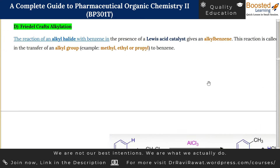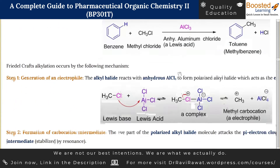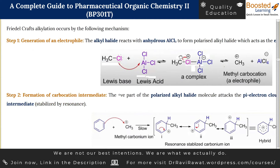In this reaction you can alkylate benzene with methyl, ethyl, or propyl groups. Such types of reactions are possible. Let us begin with the mechanism of the reaction.